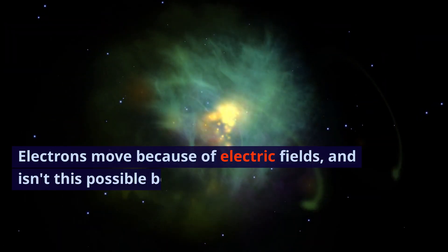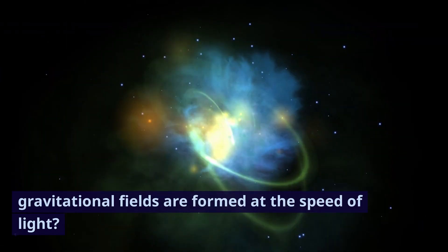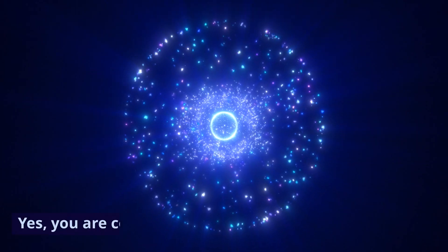Electrons move because of electric fields, and isn't this possible because electric, magnetic, and gravitational fields are formed at the speed of light? Yes, you are correct.